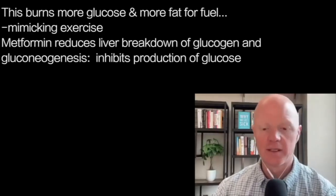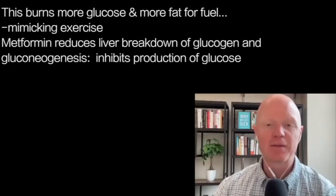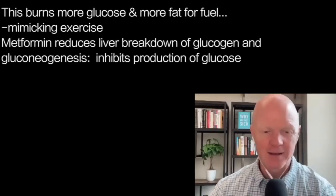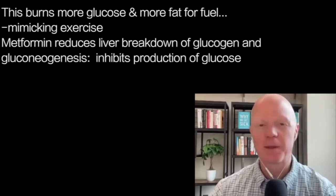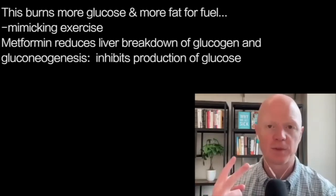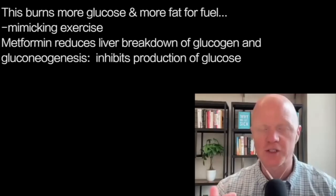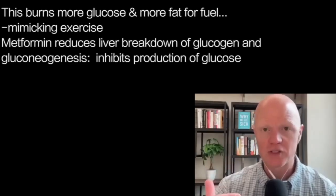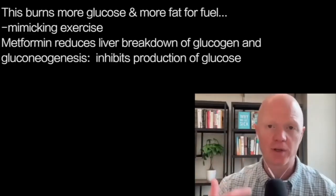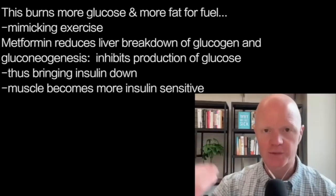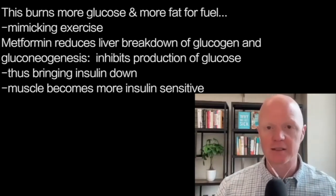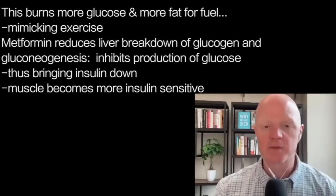Metformin ends up having generally favorable metabolic outcomes. In fact, metformin is sometimes referred to as an exercise mimetic — a drug that can mimic the effects of exercise. It has two well-documented general effects: one, it reduces the liver's production from glycogen breakdown and gluconeogenesis, stopping or slowing the liver's output of glucose, which reduces blood glucose and helps insulin come down. Two, there's evidence that muscle — which by mass is the main insulin-sensitive, insulin-dependent tissue in the body — becomes more insulin-sensitive directly.